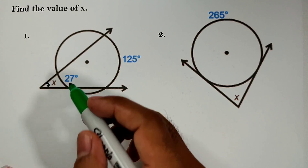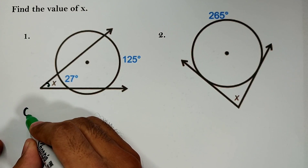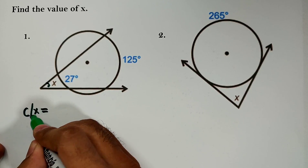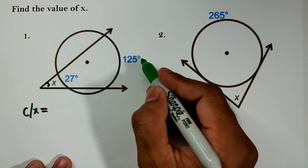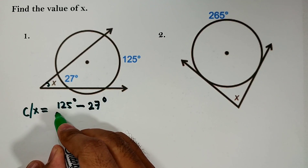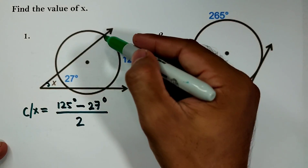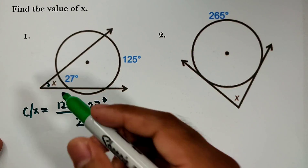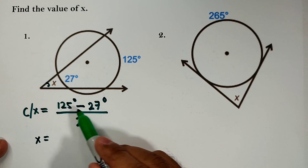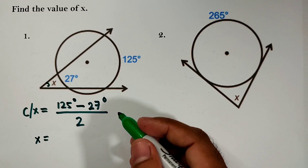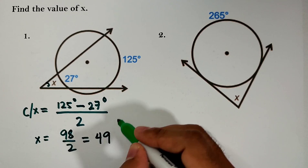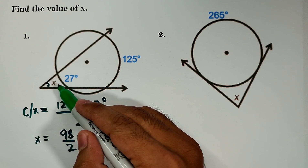Using the formula for this figure, X equals A minus B divided by 2. A is 125 degrees and B is 27 degrees. So X = (125 − 27) / 2 = 98 / 2 = 49 degrees. Therefore, the value of X in item number 1 is 49 degrees.